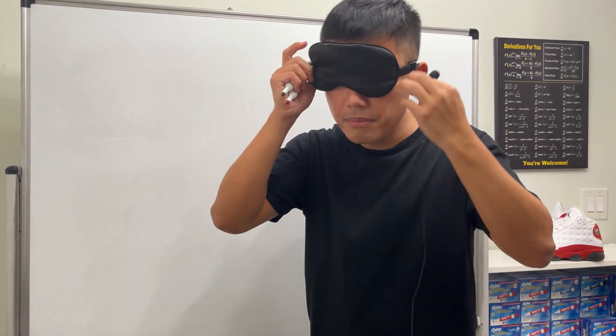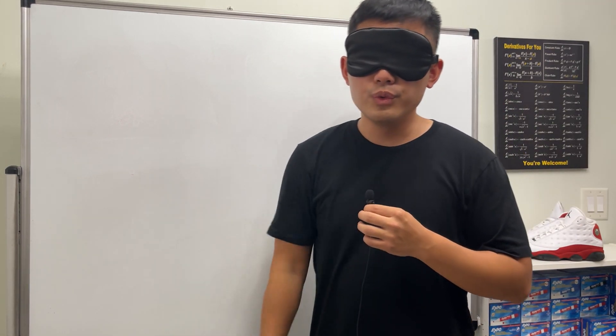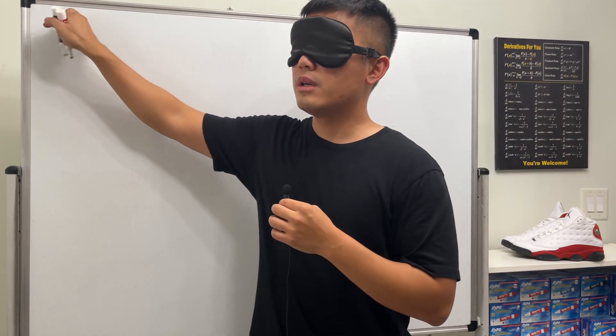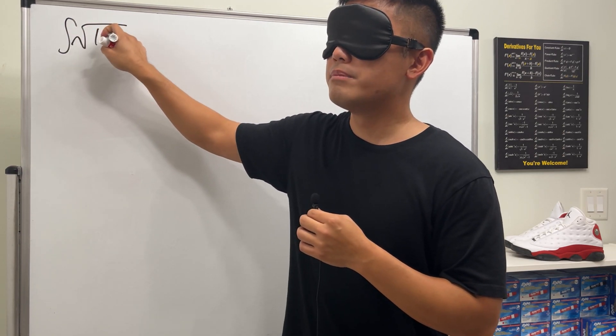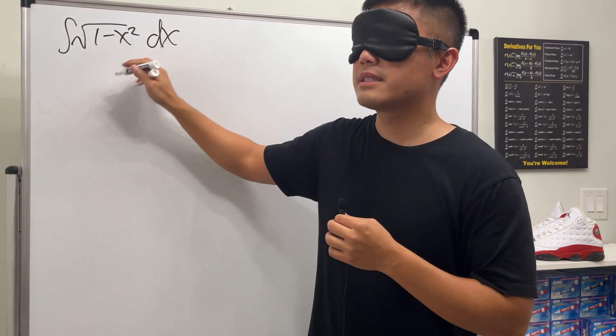Okay, let's do some math for fun, and to make this more fun I'm going to blindfold myself. We'll do an integral right here: the integral of the square root of 1 minus x squared dx.